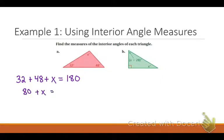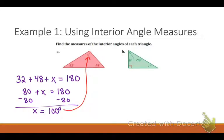So 80 plus x equals 180. Now what do I need to do next? Subtract by 80 on both sides. Minus 80 on both sides, and x equals 100. Now this is not my final answer. If you remember back to chapter one, we had to then specifically list all three interior angle measures.